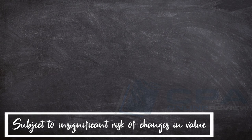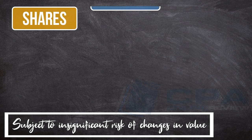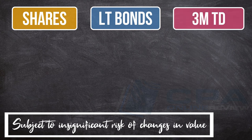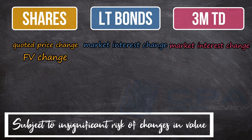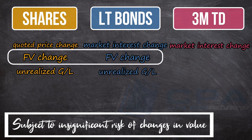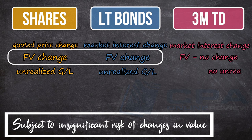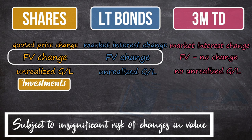Subject to insignificant risk of changes in value — this is the third feature of a cash equivalent. Comparing shares, long-term bonds, and 3-month time deposits: quoted prices of shares change regularly; market rate of interest on long-term bonds also changes; the same is true for time deposits. However, these changes cause the fair value of both shares and bonds to fluctuate, leading to unrealized gains or losses. For cash equivalents, these changes are insignificant, causing almost no change to the fair value of the instrument — thus, there are no unrealized gains or losses. For these reasons, share instruments are investments, long-term bonds are investments, while 3-month time deposits are cash equivalents.